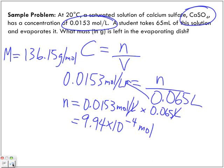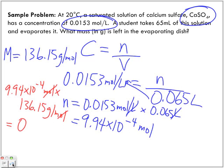So we have 9.94 times 10 to the negative 4 moles. And we're going to multiply it by 136.15 grams per mole. Moles cancel out. And the mass that I'm left with is 0.135 grams. But the least number of significant digits in my question is 2.